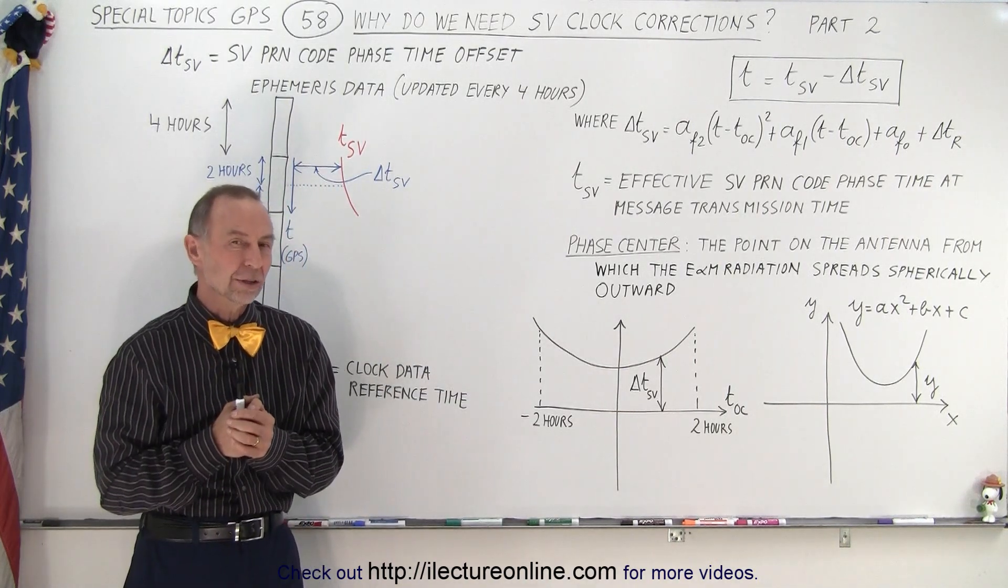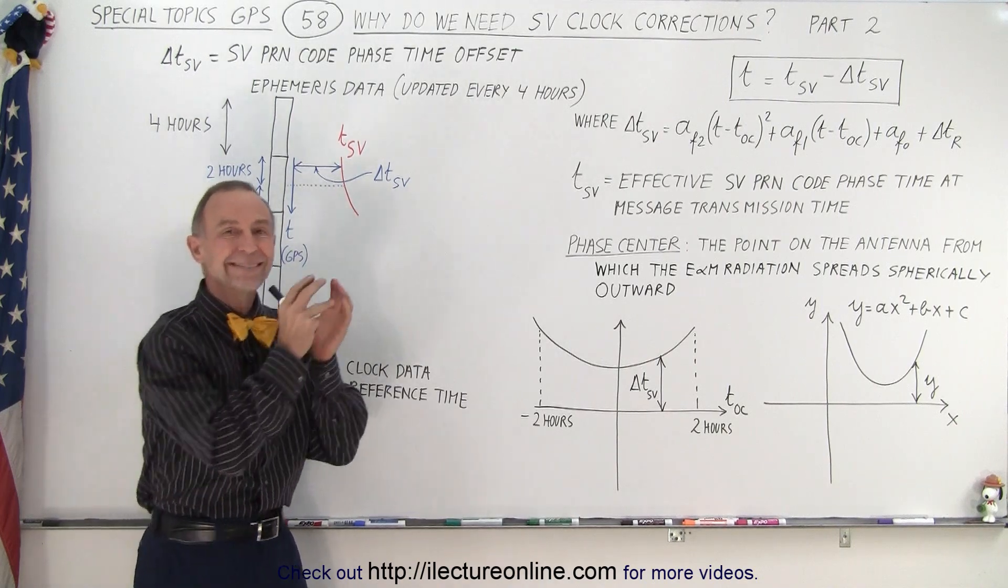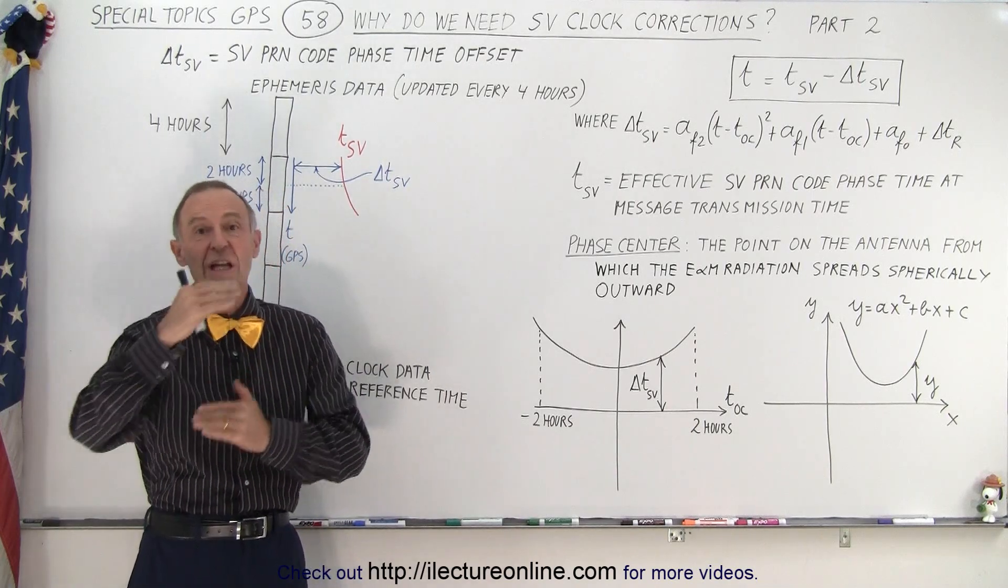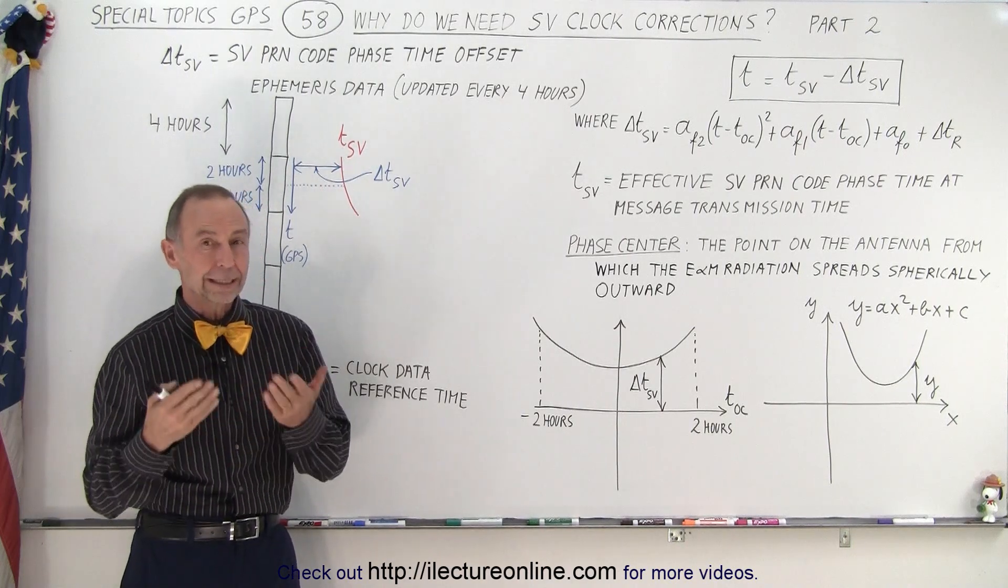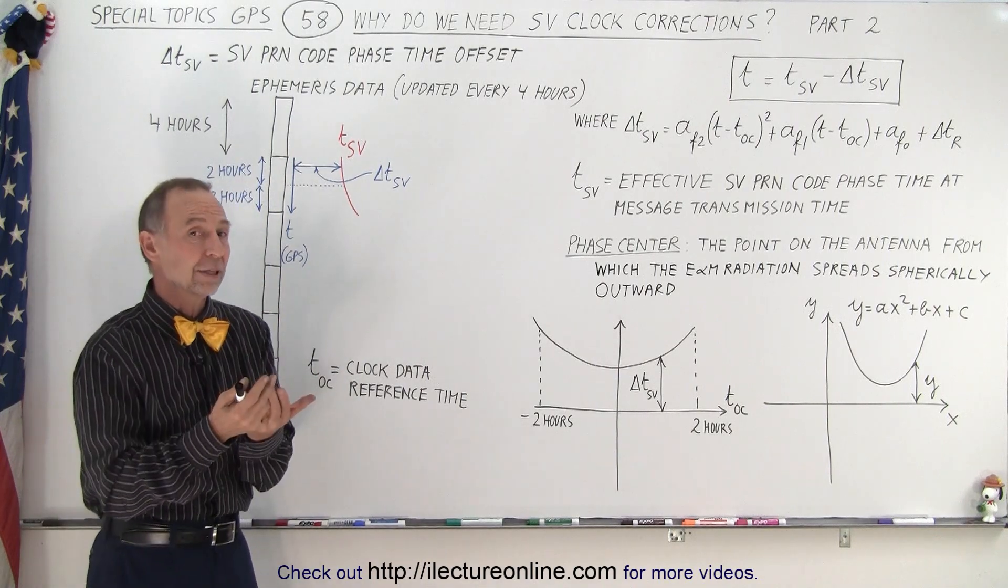We know that there's a difference between the two times, and that difference changes continuously as there's a drift on the clock in the satellites due to various reasons. One of them is that they don't run as accurately as the atomic clocks on earth, and secondly we have some relativistic effects which cause the clocks on the satellite to run a little bit faster than the clocks on earth.